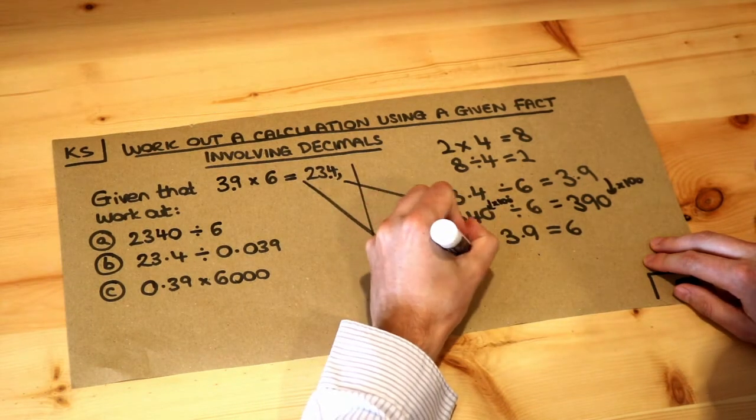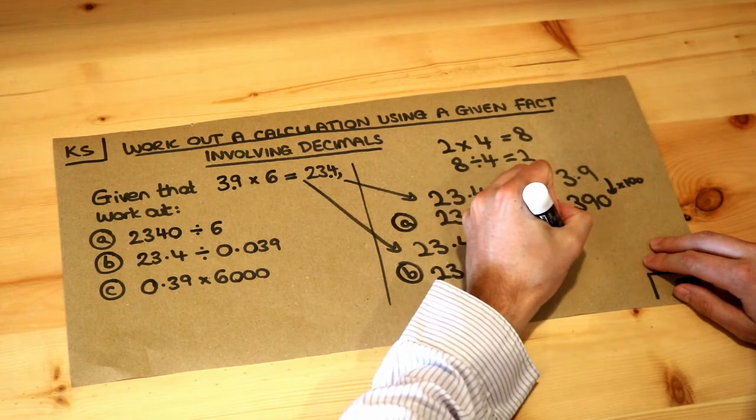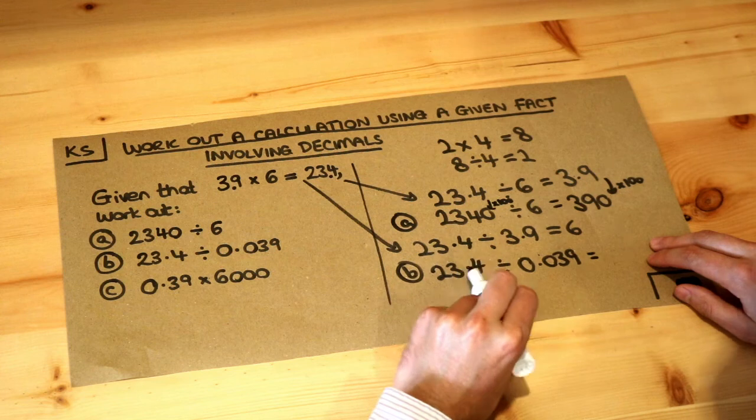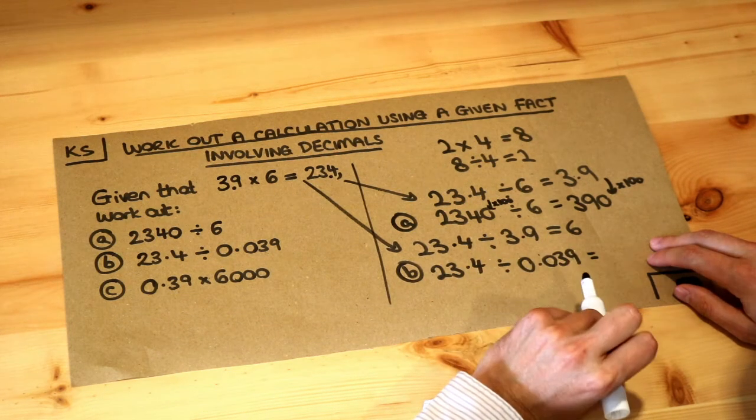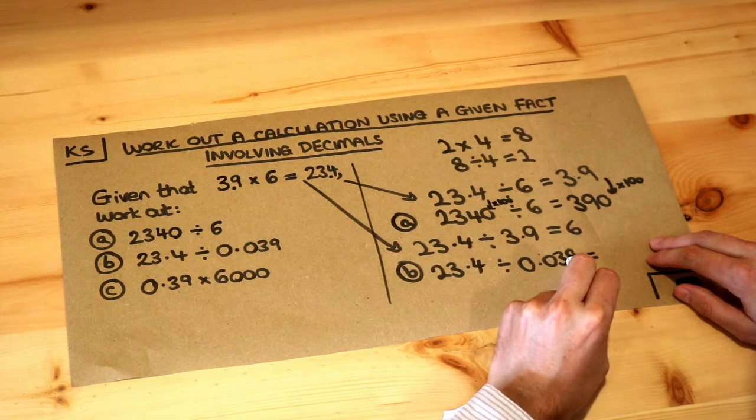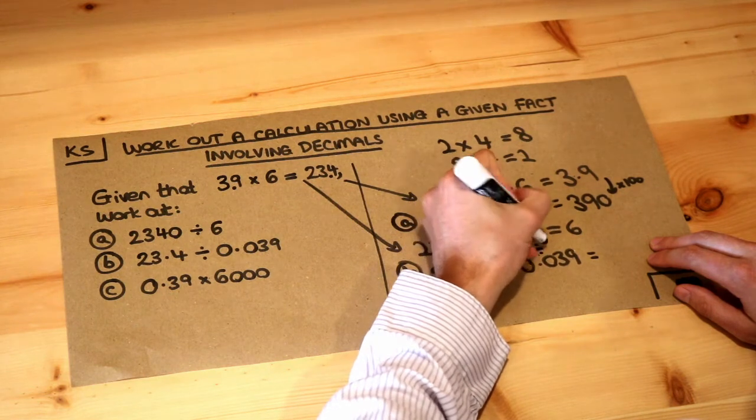I've got 23.4 divided by 0.039. Now we have to be very careful here. This number is staying the same. This number is becoming 100 times smaller. Look, the decimal point was between the 3 and the 9 and it's moved two places to the left. It's 100 times smaller. So that's divided by 100.